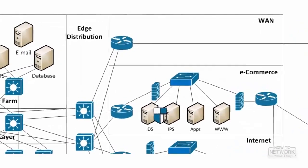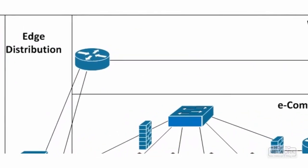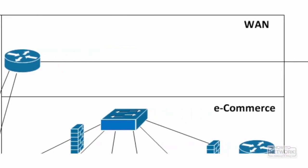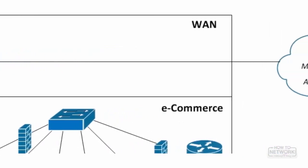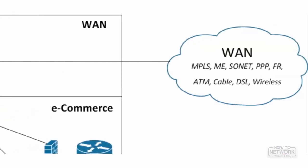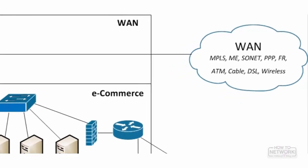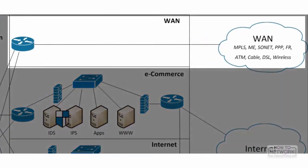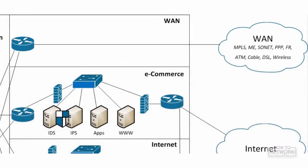The WAN block connects to the enterprise edge and any of the many possible wide area network transport protocols or technologies — from standard MPLS connectivity to something more obscure such as directed wireless connectivity between a headquarters and a branch office. If you're transporting data from one location to another without using the internet, it's going to use the WAN module. Normally you'll find routers in the WAN block because of the WAN connectivity requirements and the interfaces required.